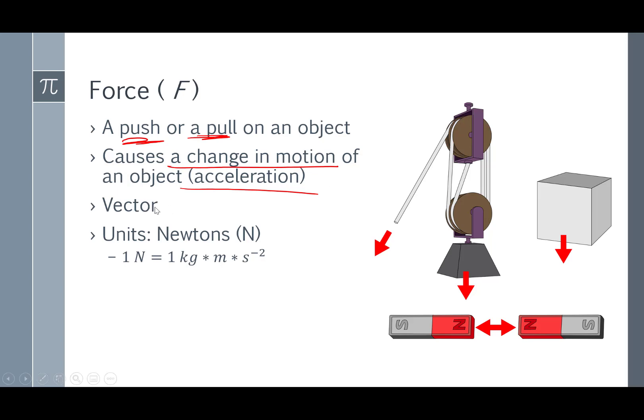Forces are vectors, which means they point in a particular direction. The units for force are Newtons, named after Isaac Newton. Capital N is the abbreviation, and Newton is actually a derived unit. One Newton is equal to a kilogram times a meter per second squared. Kilogram meter per second squared is a unit of mass times a unit of acceleration gives a unit of force.